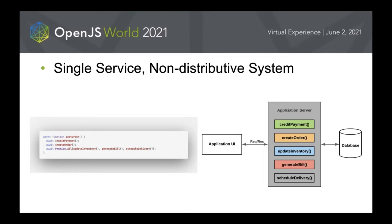First, we make sure the payment is paid. We place the order, and after successfully placing it, we independently update the inventory, generate a bill, and schedule delivery. All the IPC calls are like normal function calls since they are on the same system. It is definitely simpler to implement from an infrastructure point of view, and it can be tempting to begin with this if the application is in MVP or POC phase. That is how we started.